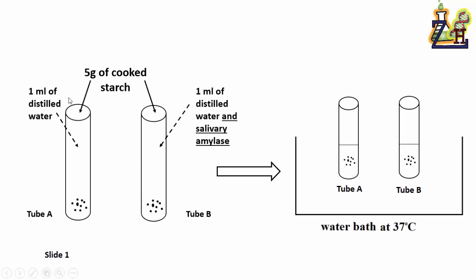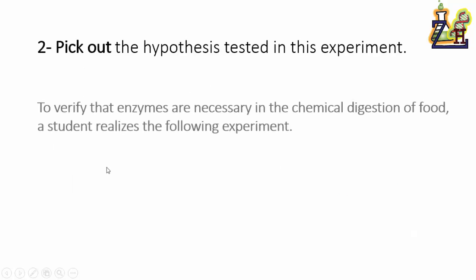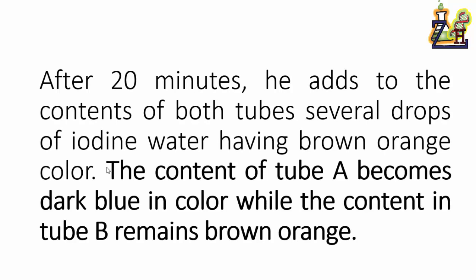Number three: indicate the tube in which digestion will take place and justify. Which tube will have digestion? Let's go back to the setup to remember. In tube A we had cooked starch and distilled water, while in tube B we had cooked starch, distilled water and salivary amylase. In which tube will there be digestion? Could it be in tube A?